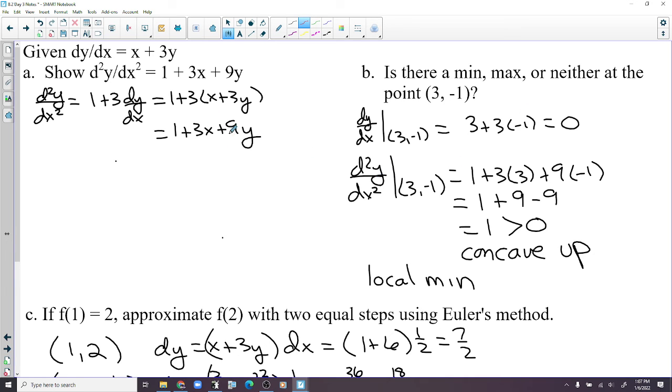If we evaluate the second derivative at 3, negative 1, we find out that it's 1, which is greater than 0, which means the graph is concave up there. And if you have a concave up graph, then you must have a minimum value there. So that's the second derivative test for minimums and maximums.